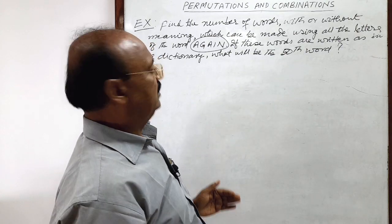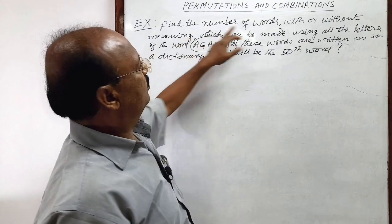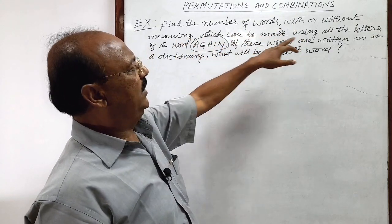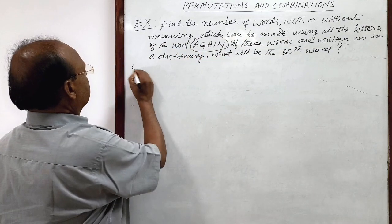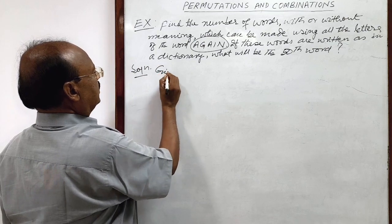So question is given in two parts. First, number of words with or without meaning which can be made using all the letters of the word again. So let us see the solution here. Here given word is again.